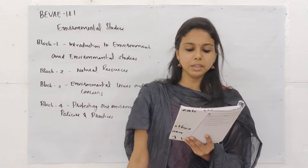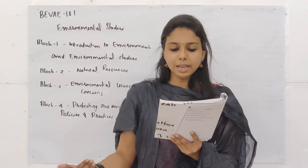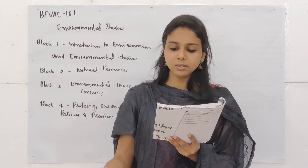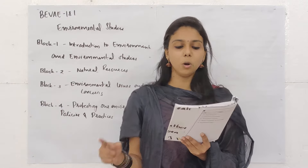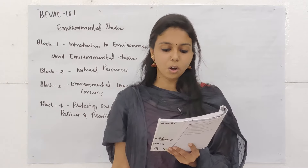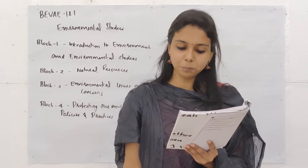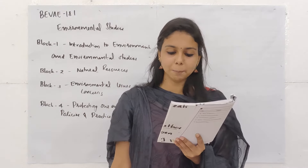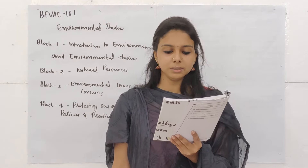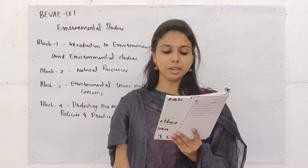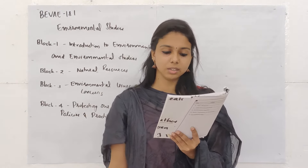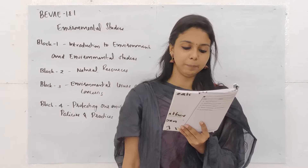Question 10: In an ecosystem, energy is lost in the form of? Options: A. Heat energy, B. Saprophytic matter, C. Chemical energy, D. Rains. The answer is Heat energy, Option A.